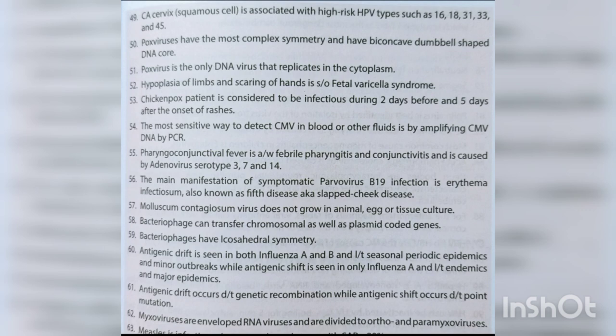Pox viruses have the most complex symmetry with a biconcave dumbbell-shaped DNA core, and are the only DNA viruses that replicate in the cytoplasm. Hypoplasia of limbs and scarring of hands is suggestive of fetal varicella syndrome. A chickenpox patient is infectious during 2 days before and 5 days after onset of rashes. The most sensitive way to detect CMV in blood or other fluids is by amplifying CMV DNA by PCR. Pharyngoconjunctival fever is associated with febrile pharyngitis and conjunctivitis caused by adenovirus serotypes 3, 7 and 14. The main manifestation of symptomatic parvovirus B19 infection is erythema infectiosum, also known as fifth disease or slapped-cheek disease.